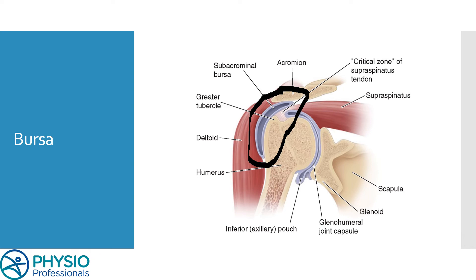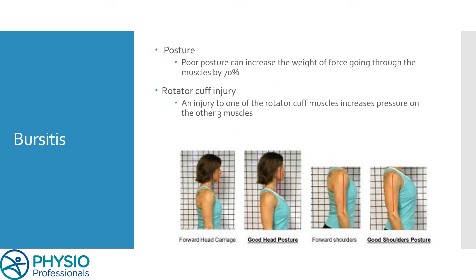So what can cause inflammation of this bursa — what we call bursitis? The number one cause we see is poor posture. Poor posture causes an increase in force through those shoulder muscles of up to 70% with that rounded shoulder position. With phones and computers, we're seeing more of that poor posture, which is why bursitis is increasing. Lifting 10 kilos with poor posture can effectively mean you're lifting 17 kilograms of force through the shoulder muscles, pushing extra strain on the bursa until it becomes inflamed.